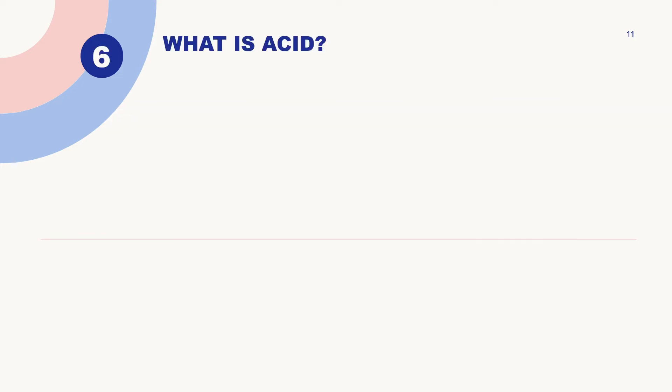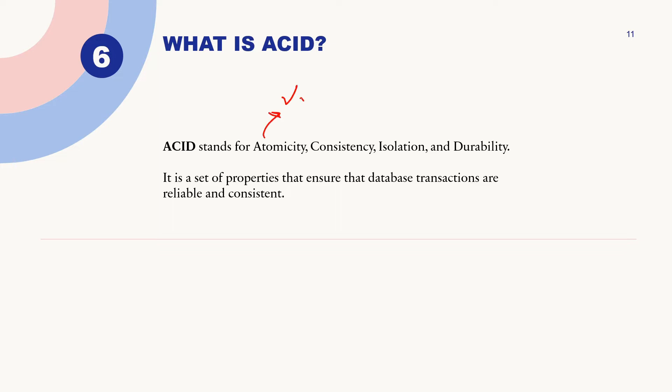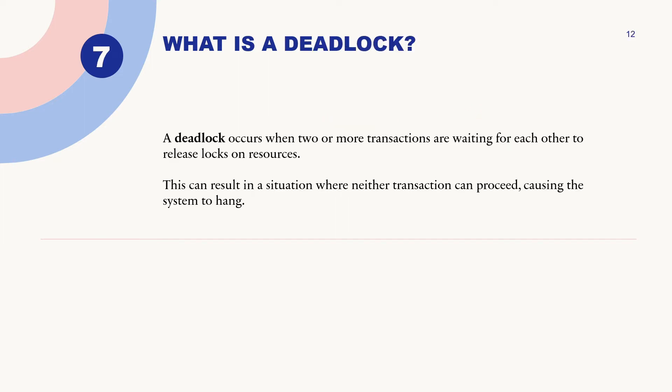What are ACID properties in SQL? ACID stands for Atomicity, Consistency, Isolation, and Durability. Atomicity means either the transaction will happen or not. Consistency means the database must be consistent before and after the transaction. Isolation means multiple transactions occur independently without any interference. Durability means the changes of a successful transaction occur even if the system fails.